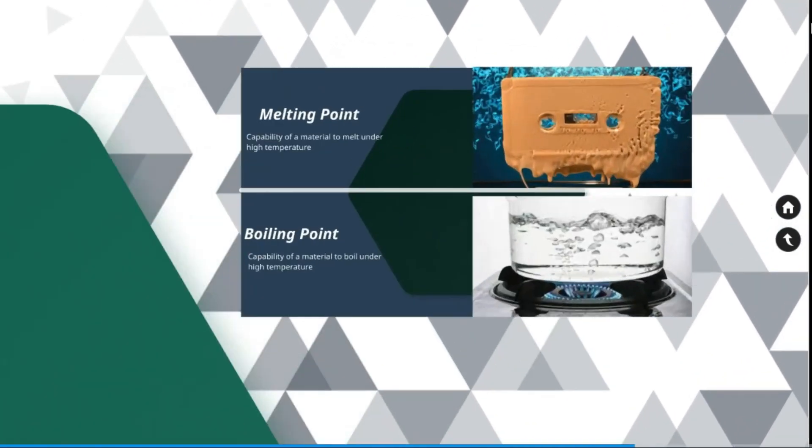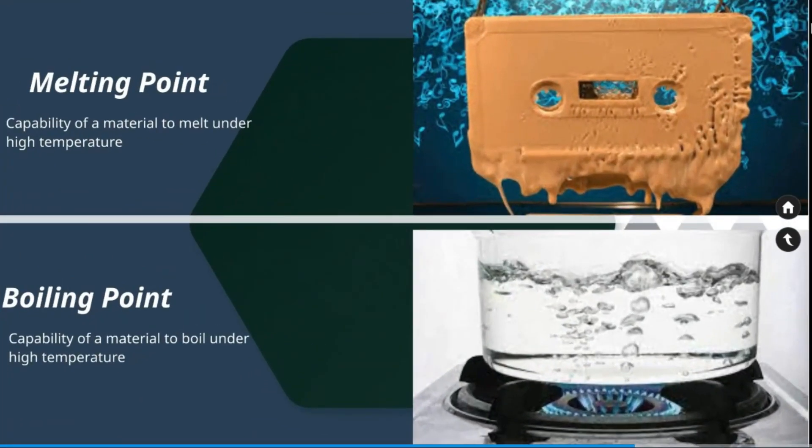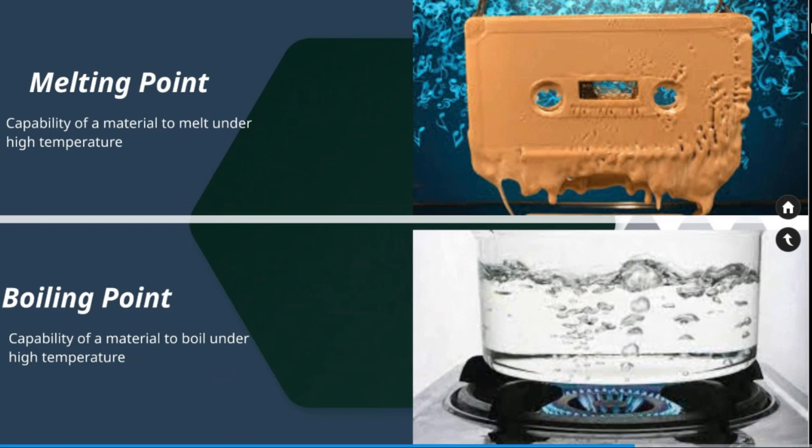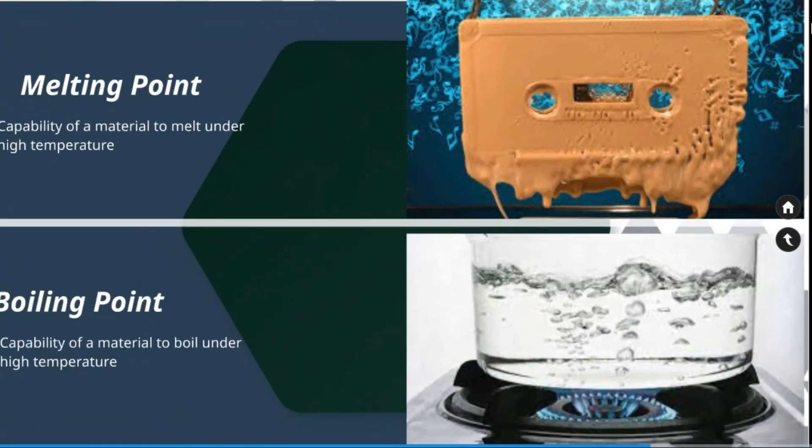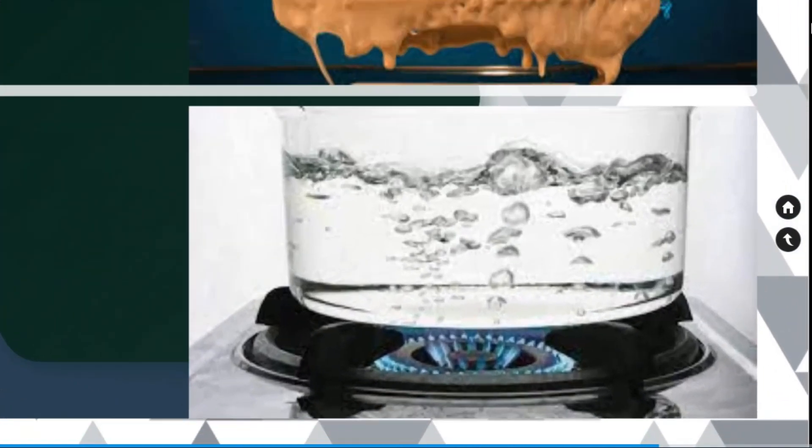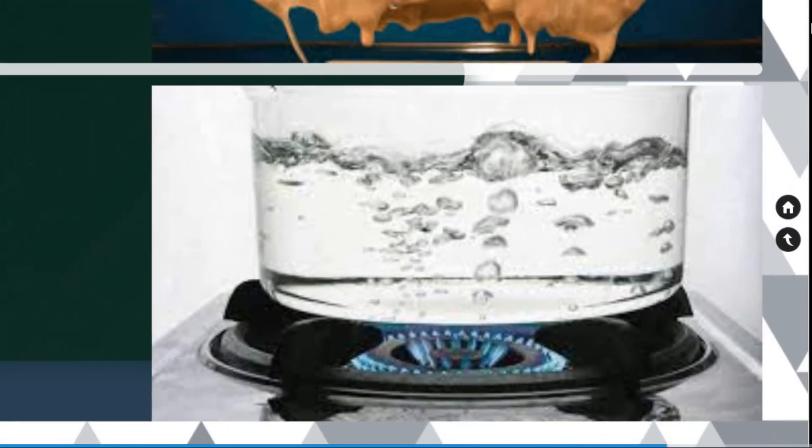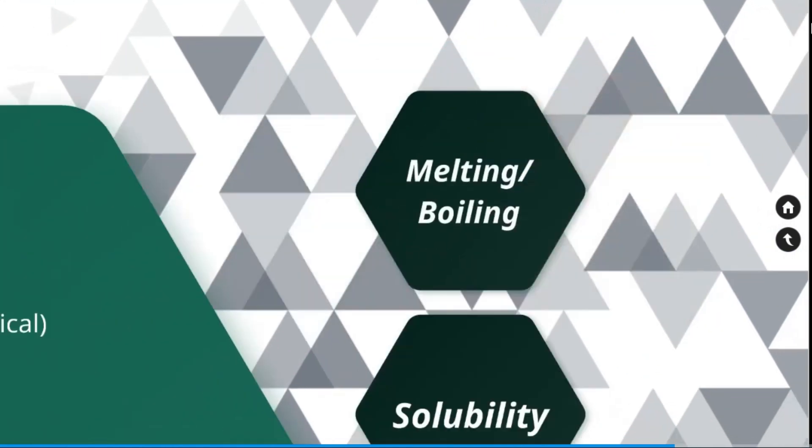Melting point and boiling point. The capability of a material to melt under high temperature defines the melting point of material. Melting point is the temperature at which material goes from solid to liquid state. Boiling point. Capability of a material to boil under high temperature is called boiling point.